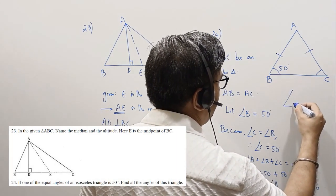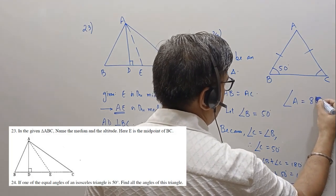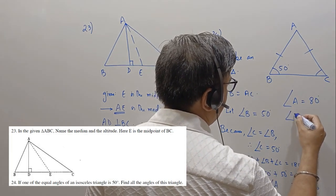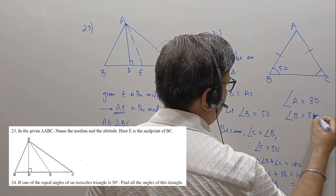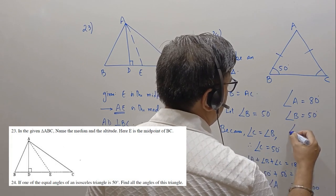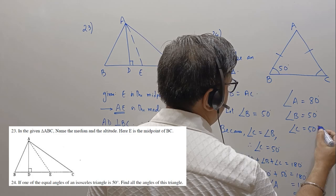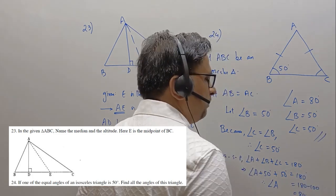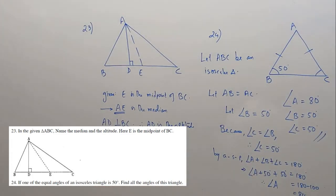Therefore, angle A equals 180 minus 100, which is equal to 80 degrees. Summarizing: angle A is equal to 80 degrees, angle B is equal to 50 degrees, and angle C is equal to 50 degrees. These are the measures of the three angles of the triangle.